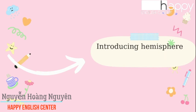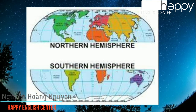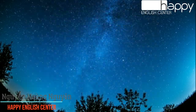First, I would like to share with you the Hemisphere. The equator is an imaginary line that divides the Earth into two parts: the Northern Hemisphere and the Southern Hemisphere.